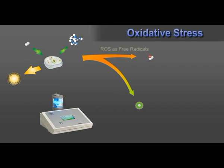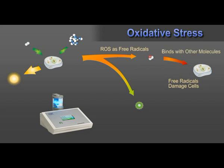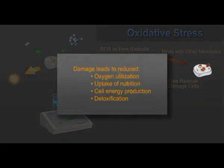When ROS acts as free radical molecules, they are harmful and cause oxidative stress, and oxidative stress causes cell damage. Damage occurs when free radicals bind with other molecules in a cell — thousands of different proteins, the DNA itself, the cell membrane, mitochondria, and other cellular components. When these components are damaged, they reduce utilization of oxygen and nutrition, lower cell energy production, compromise detoxification, and have a range of other negative impacts.